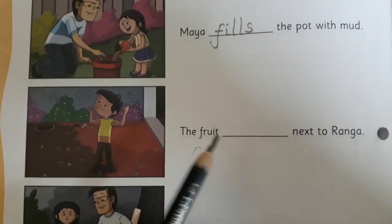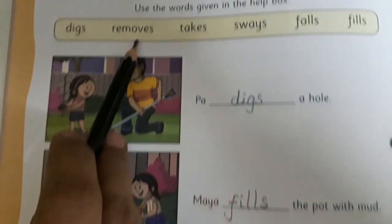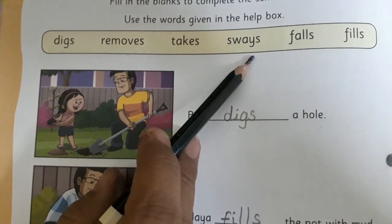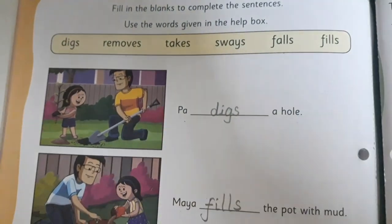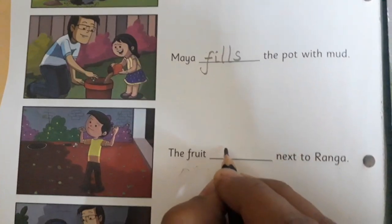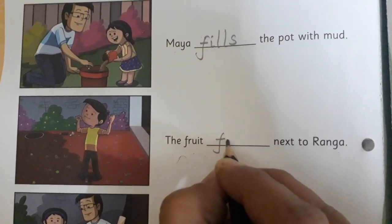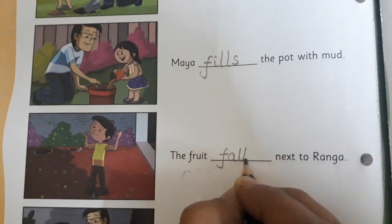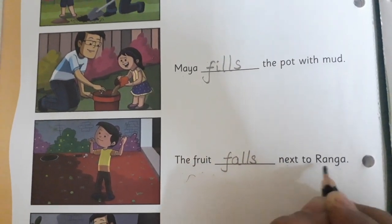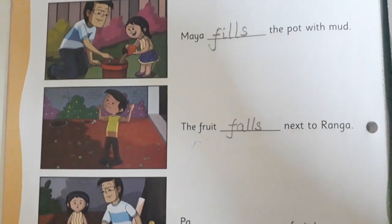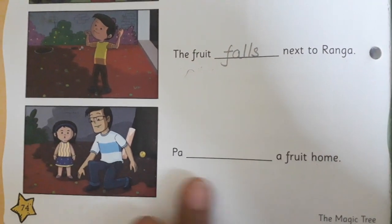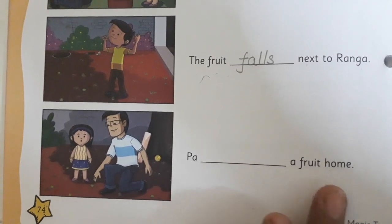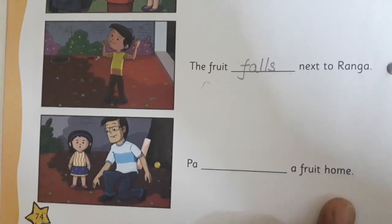So removes or sways — what will come? The fruit falls. So here we are going to write 'falls' next to ranga. Yes, that's the answer for that sentence.